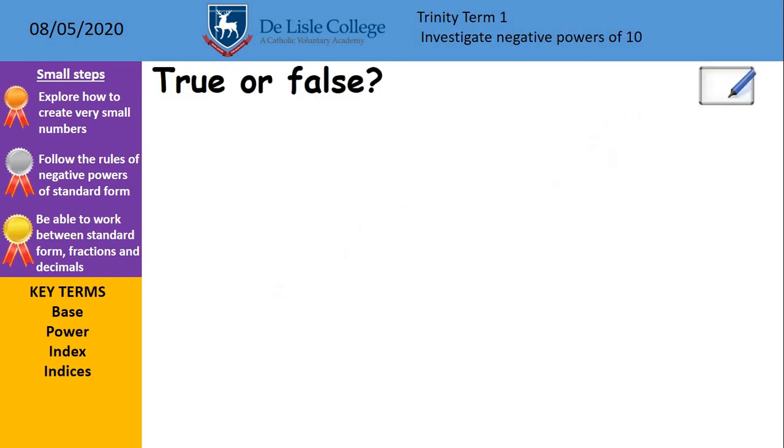So true or false, once again, if you just pause it when I put up the statement, decide whether it's true or false. If you think it's false, see if you can correct the answer there as well for me. So first up, 9.987 divided by 10 to the minus 3 is in standard form. That is false. As we said earlier, we're not using the division sign. The minus 3 tells us we're making it a smaller number. We don't need the division as well. It's still multiplied. So it would be 9.987 times by 10 to the minus 3 would be a nice standard form for us.